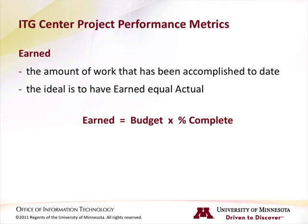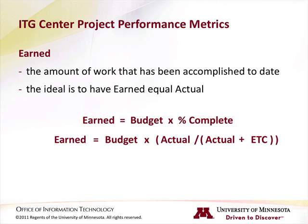Another way to view this calculation is: earned equals budget times actuals divided by actuals plus ETC. Notice the role that the core metrics play in determining the value for earned — budget, actuals, and estimated time to complete all come into play.